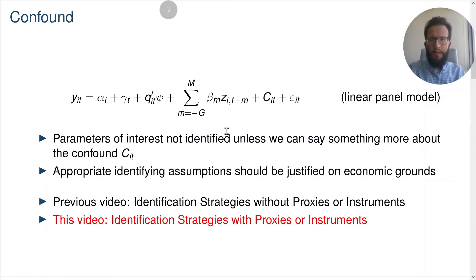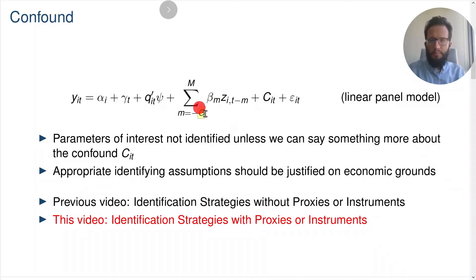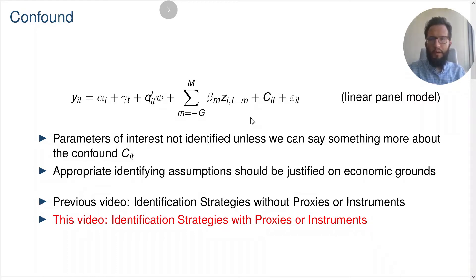Let us first recap a bit about the setup we have. We have an outcome variable of interest, Y_IT, which we regress on unit fixed effects, time effects, control variables, and on dynamic effects of the policy variable of interest, Z. These dynamic effects can go from up to G periods in the past to up to N periods in the future. And we also have an unobserved confounding variable, C_IT.